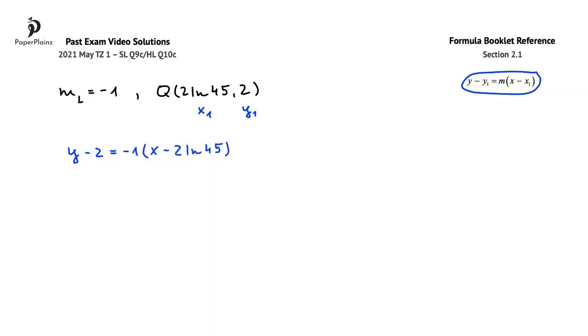Expanding the brackets and adding 2 to both sides, we get that y is equal to negative x plus 2 ln 45 plus 2, and this is what we wanted to show.